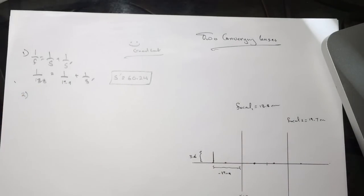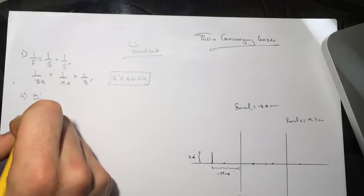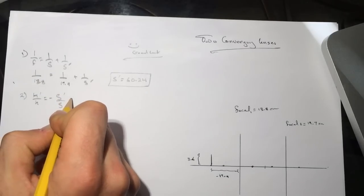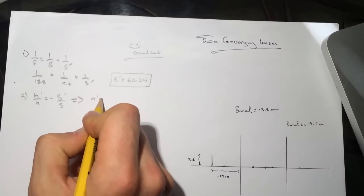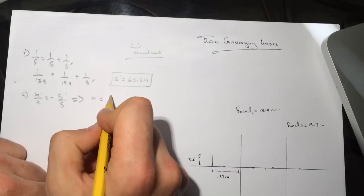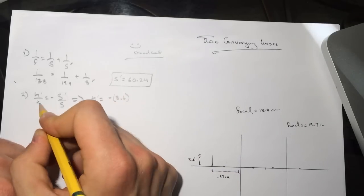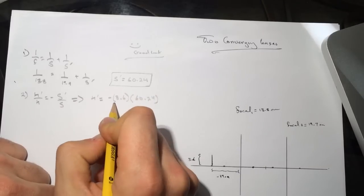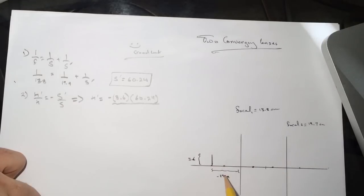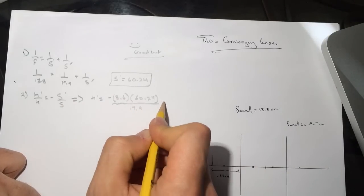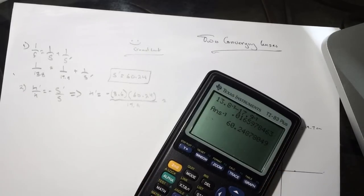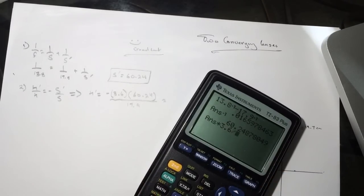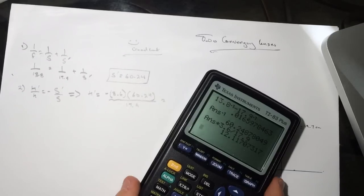Question number two is what is the Y1, the coordinate of the image of the tip of the arrow formed by the first lens? So H prime divided by H equals minus S prime divided by S. H prime equals minus 3.6, which is the H, times the S prime 60.24 divided by the S, which was 17.9. This answer times 3.6 divided by 17.9, we get 12.11.